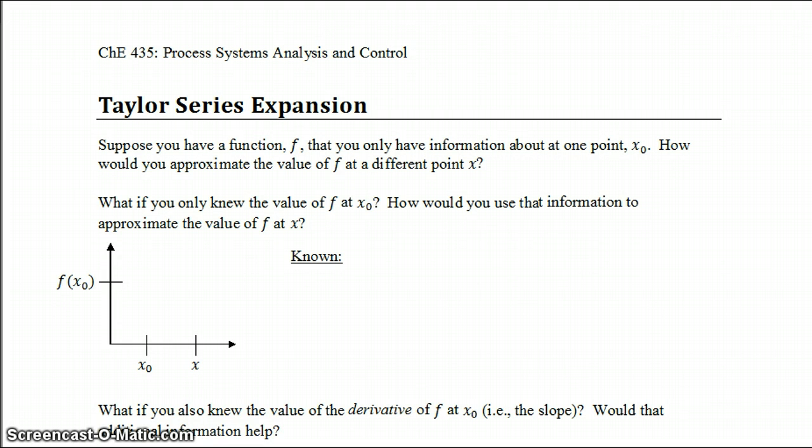This happens quite a lot in numerical methods. Let's say you're trying to calculate something numerically, and you only know the value of f at one point. Or maybe you could know it at more points, but it actually takes a lot of computational power to calculate f at different points. All we want to do is approximate the value of f at a slightly different point, let's say x.